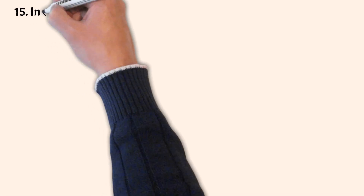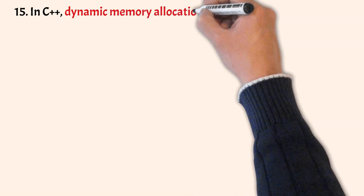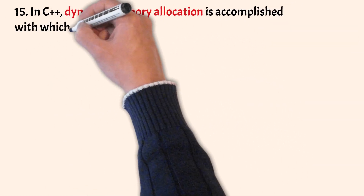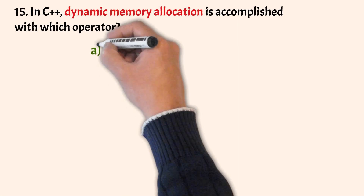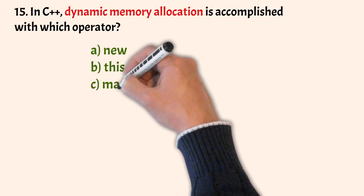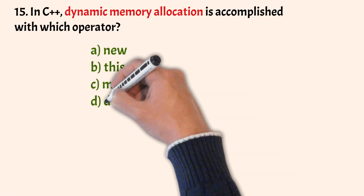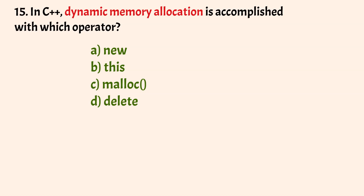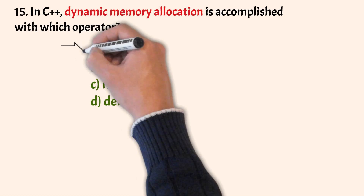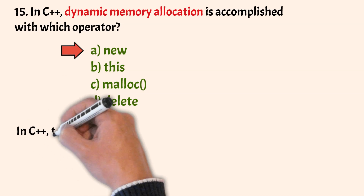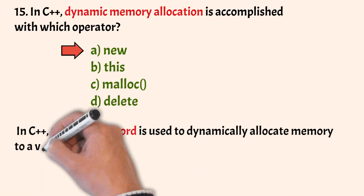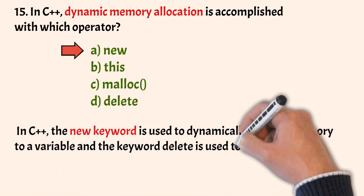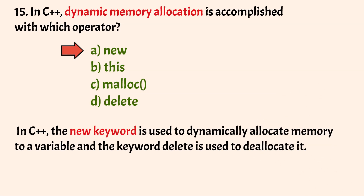In C++, dynamic memory allocation is accomplished with which operator? The options are new, this, malloc and delete. The correct answer is option A, that is new. The new keyword is used to dynamically allocate memory to a variable, and the keyword delete is used to deallocate it.